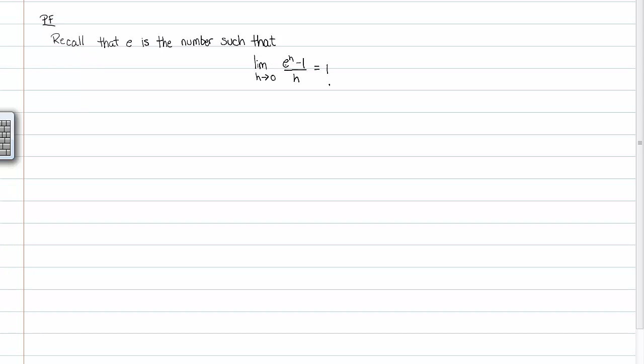You're saying that e to h minus one over h is equal to one, and that is sort of like the derivative itself. It's a very special number such that the derivative at zero is equal to one. It's an exponential function, so we're going to use that within our proof.